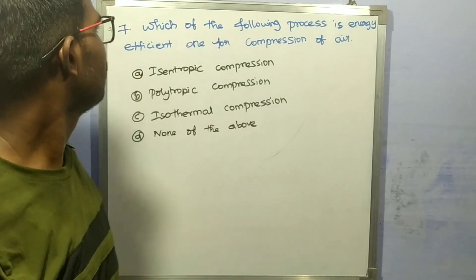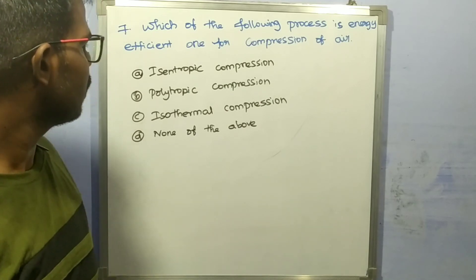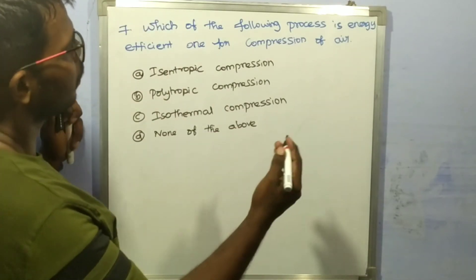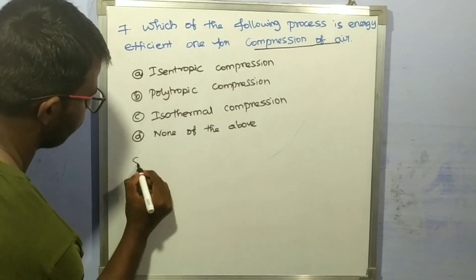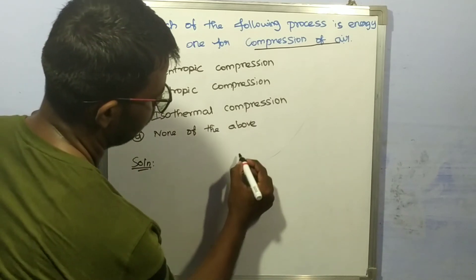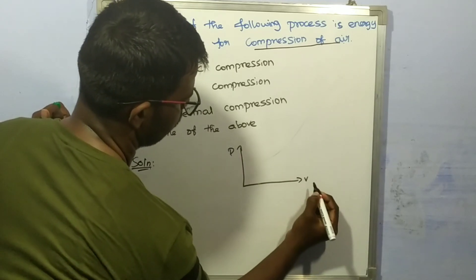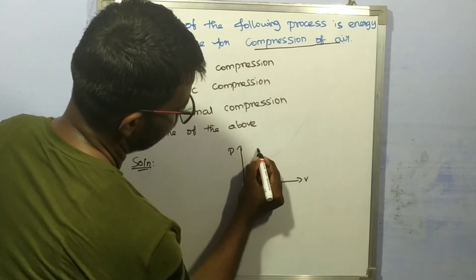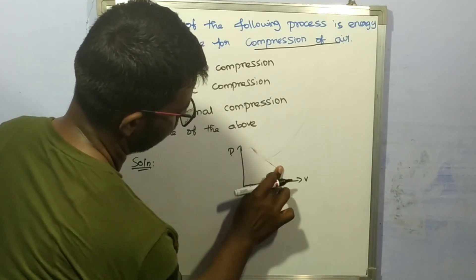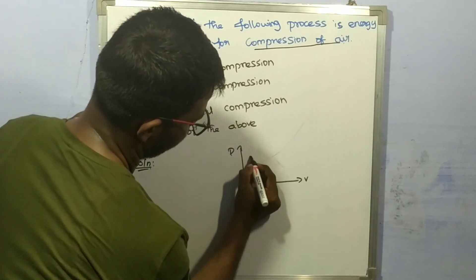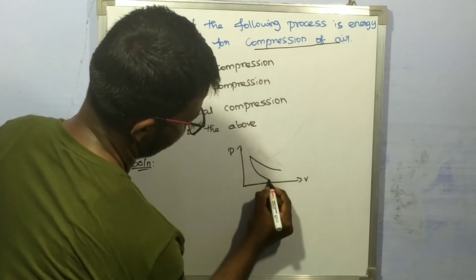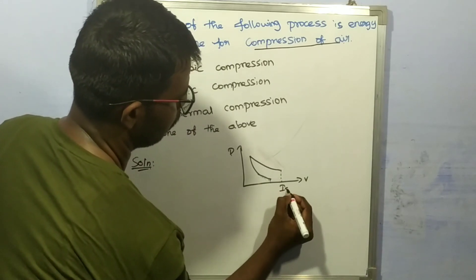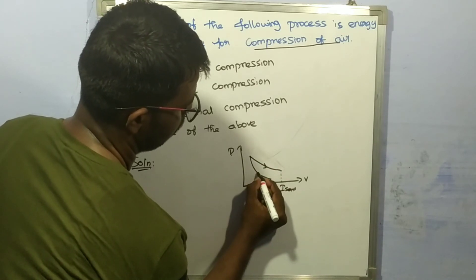Seventh question: which of the following processes is most energy efficient for compression of air? Options are: A) isentropic compression, B) polytropic compression, C) isothermal compression, D) none of the above. We examine the PV diagram — the area under the PV diagram represents work done.